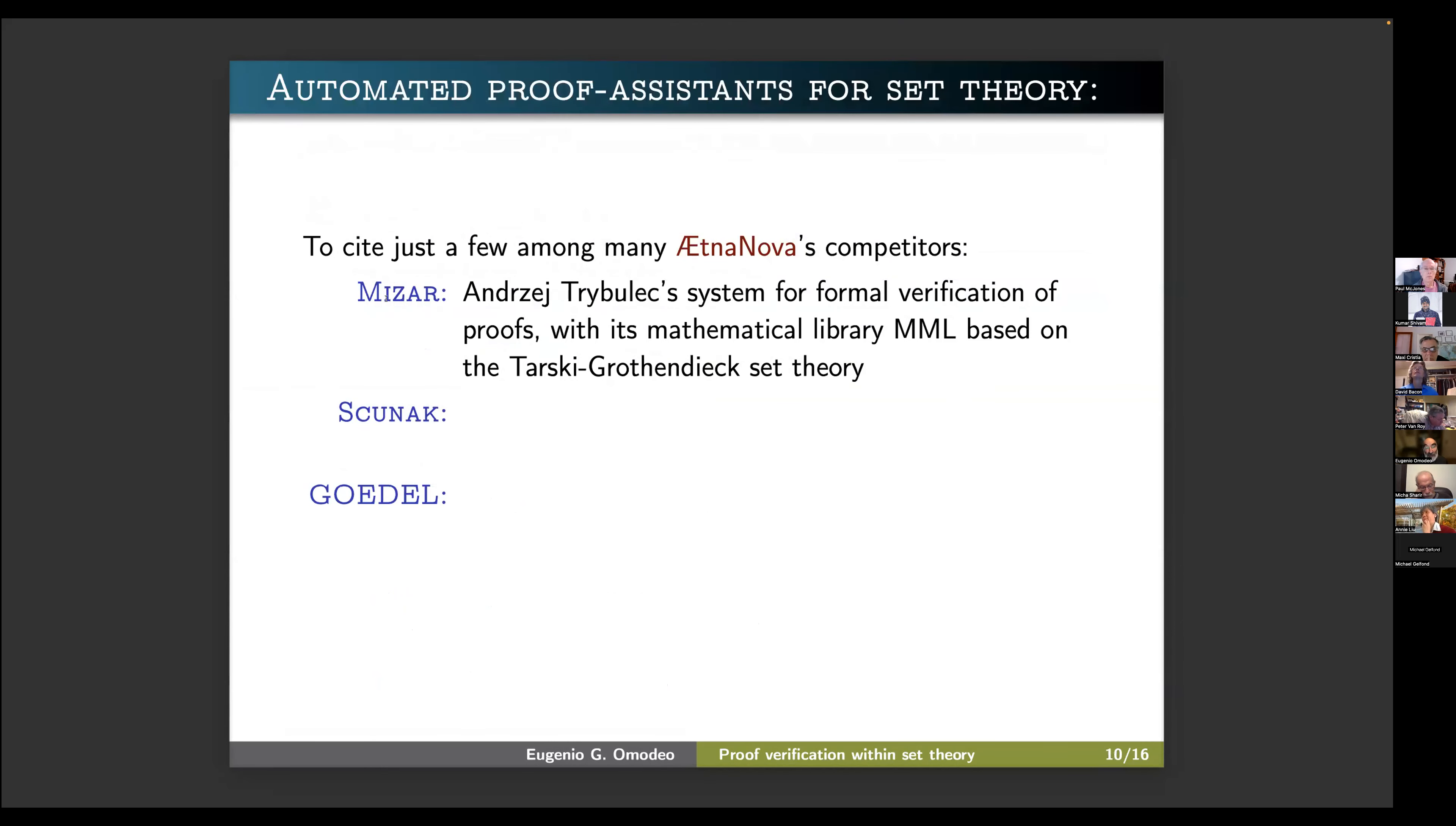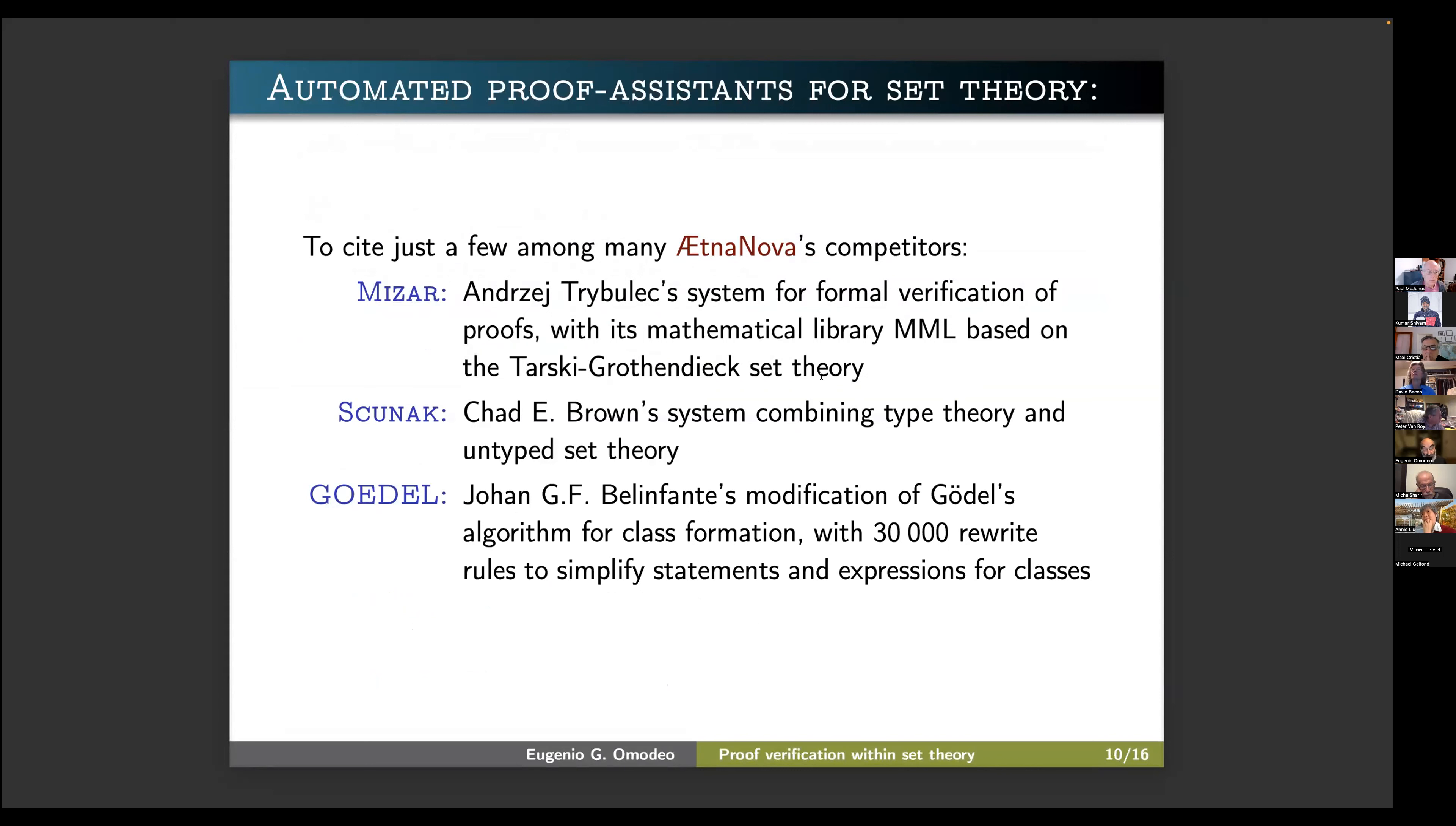There are several proof assistants for set theory, just to cite a few. One is Mizar with its mathematical library, MML, based on the Tarski-Grothendieck set theory. Another one is Isabelle/ZF. Another one is an extension of Argonne's Otter due to Belinfante. But I think Aetnanova differs from all of these. And one main difference is the fact that types which are sometimes regarded as a sort of a second foundation for formal reasoning, types are underplayed. And there is a sort of behind the scenes automatic determination of types. But this is just a marginal characteristic of Aetnanova.